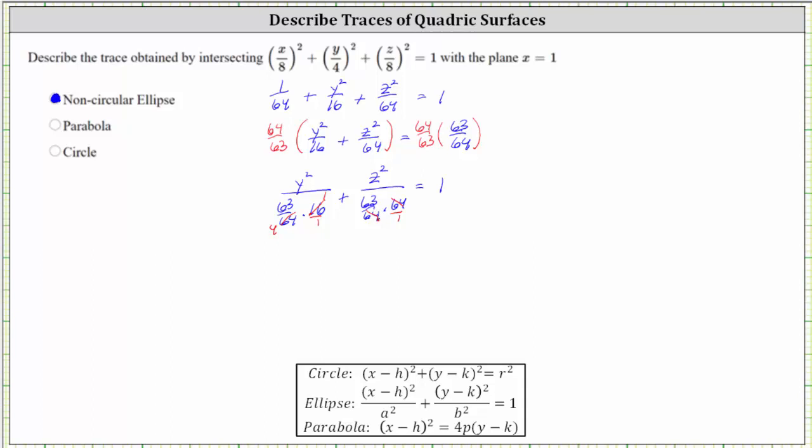So the simplified equation of the x equals one trace is y squared divided by 63/4 plus z squared divided by 63 equals one.